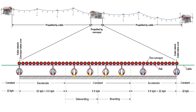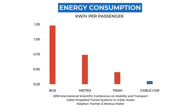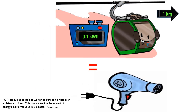ART is indeed a brilliant application of engineering principles. This is a bar chart comparison of electricity consumption of different types of mass transportation. From an apple-to-apple comparison, the consumption is measured in kilowatt per hour per passenger. Expectedly, the cable car consumes the least amount of electricity by a very wide margin. ART consumes as little as 0.1 kilowatt per hour to transport one rider over a distance of one kilometer — equivalent to the amount of energy a hairdryer uses in five minutes.